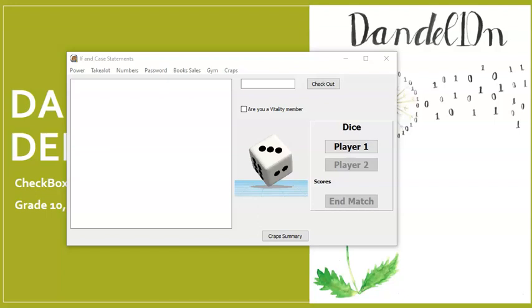In the If Statements program, you are going to find a little object looking like this. This is one object. This part here, or you are a Vitality member, that is the caption of the checkbox. And the user can either select it or unselect it.